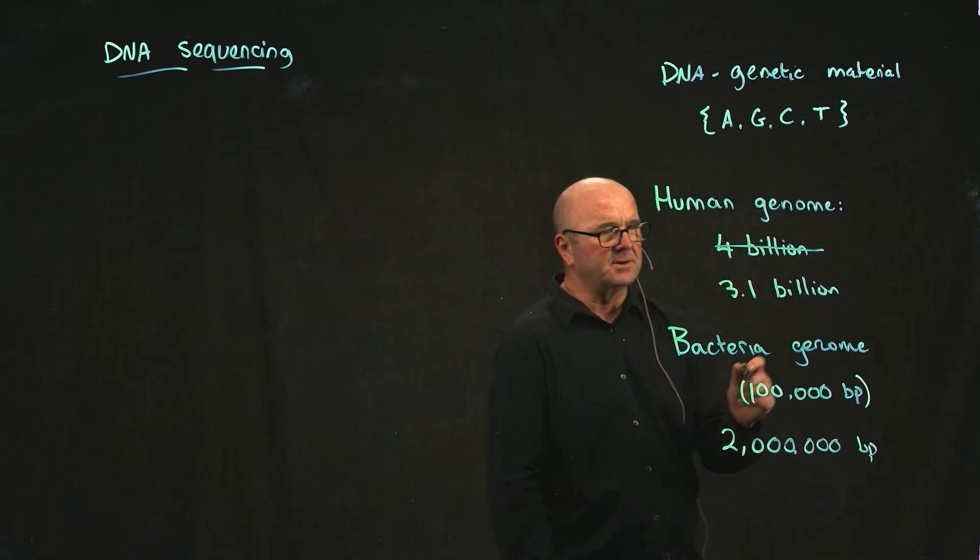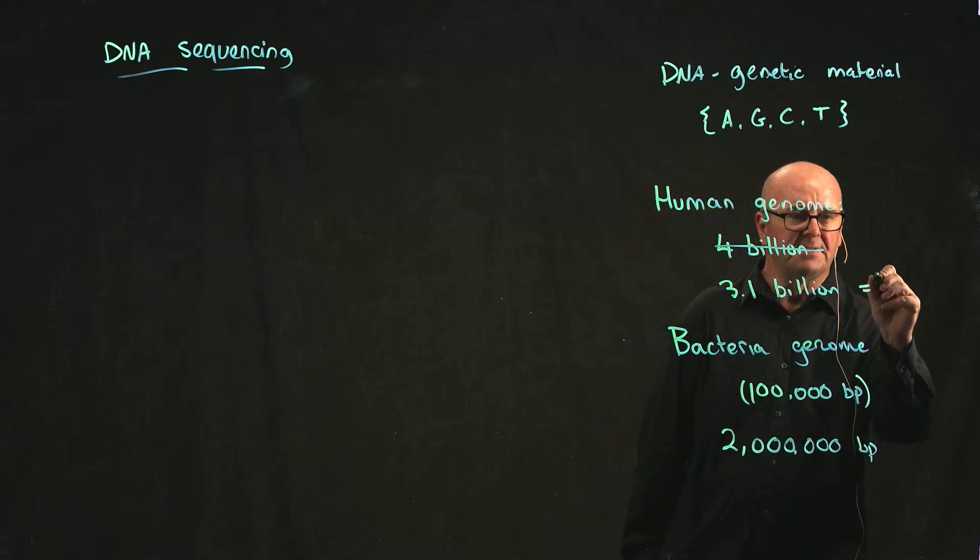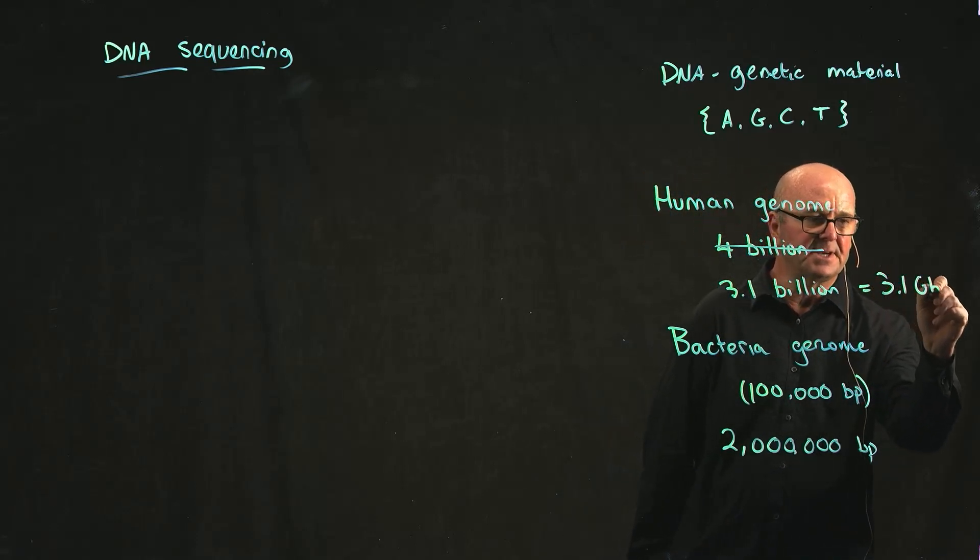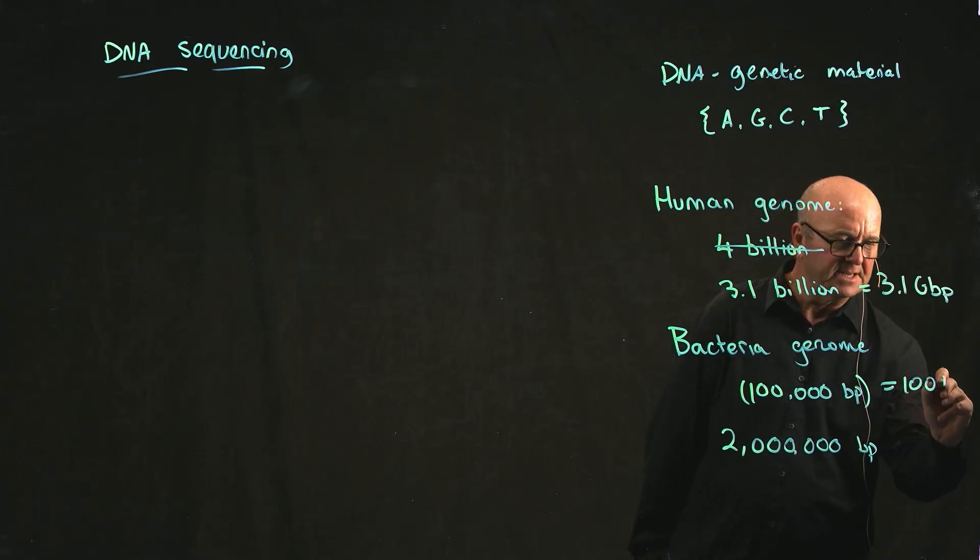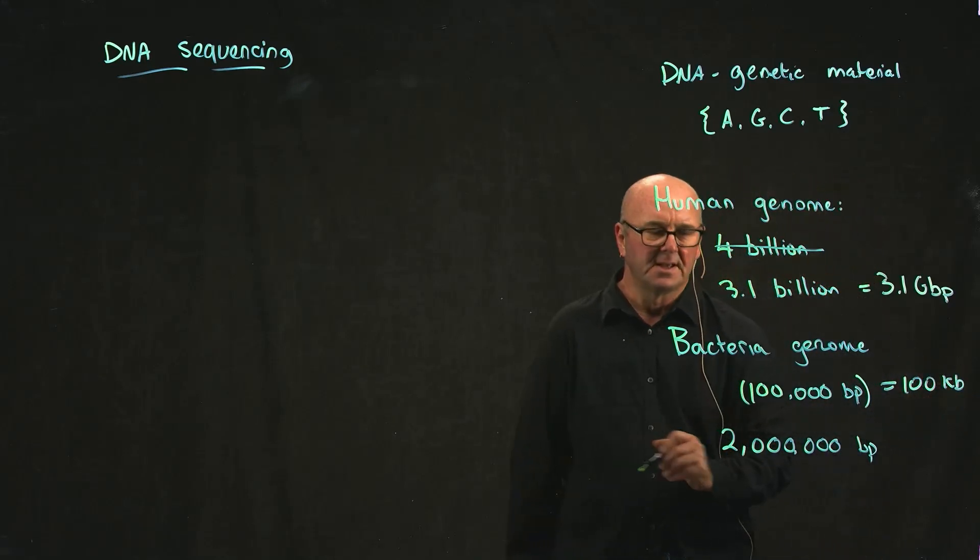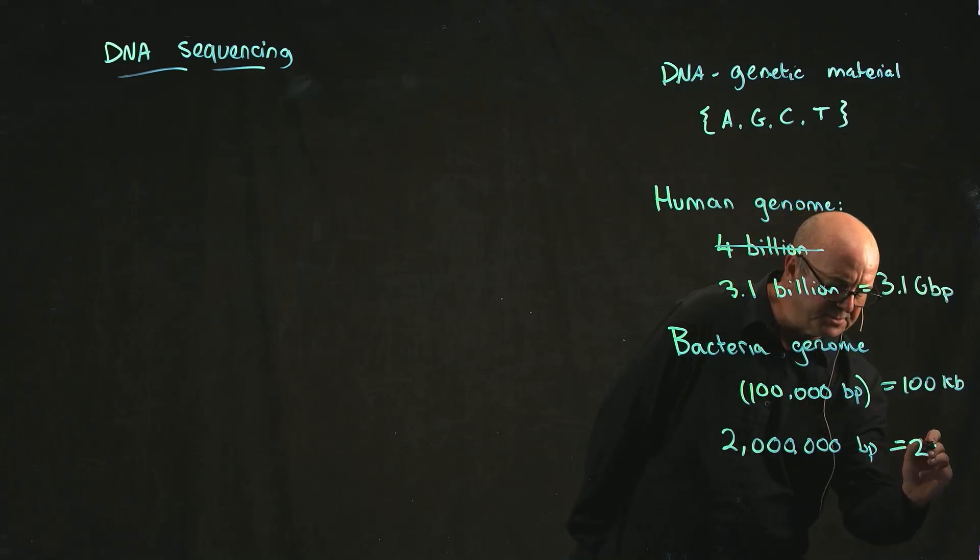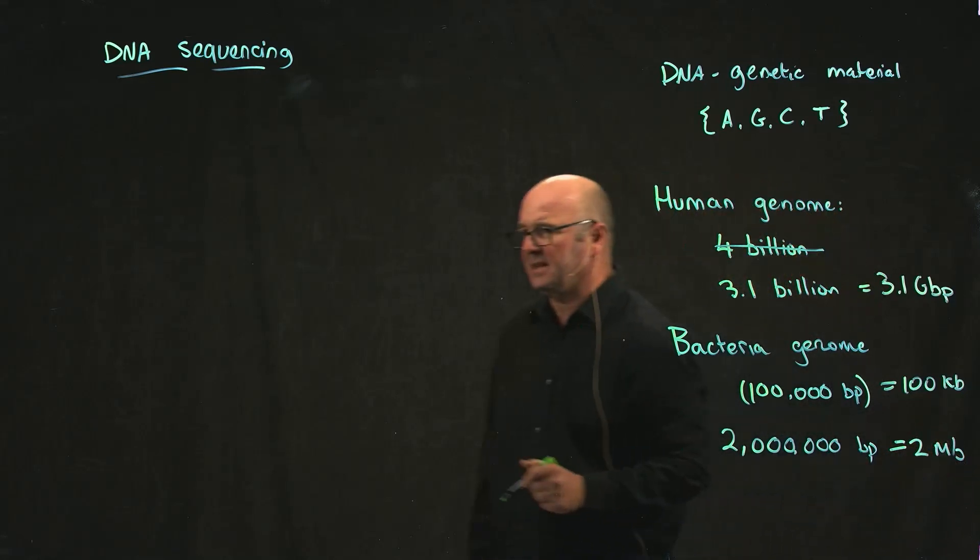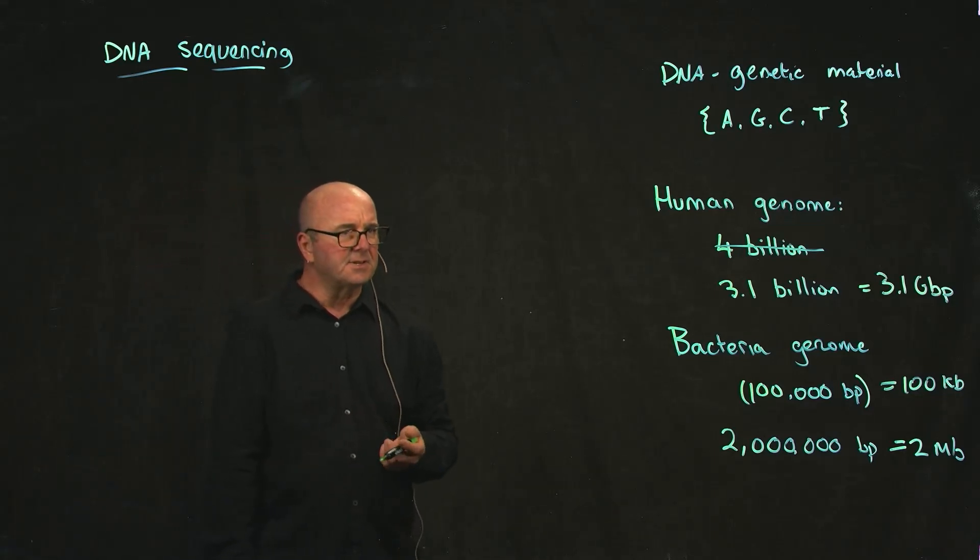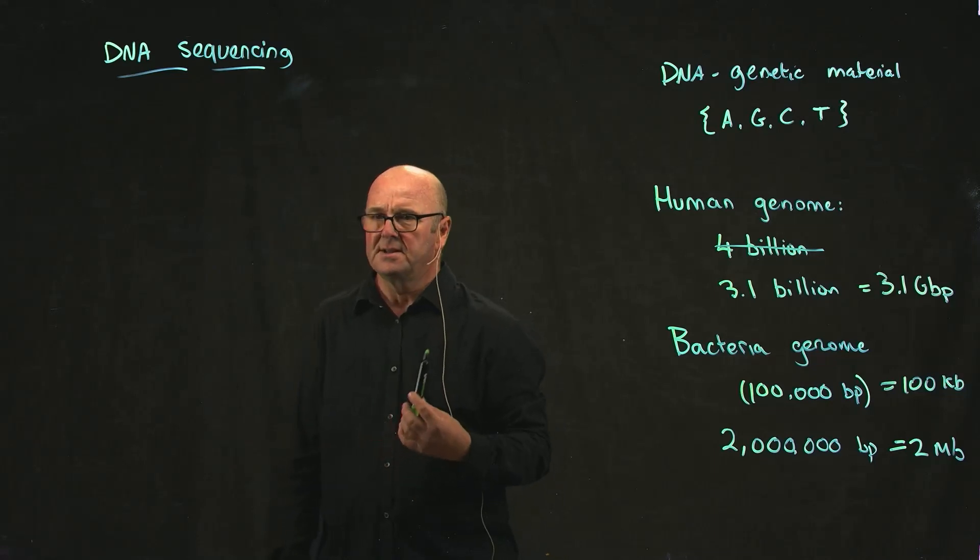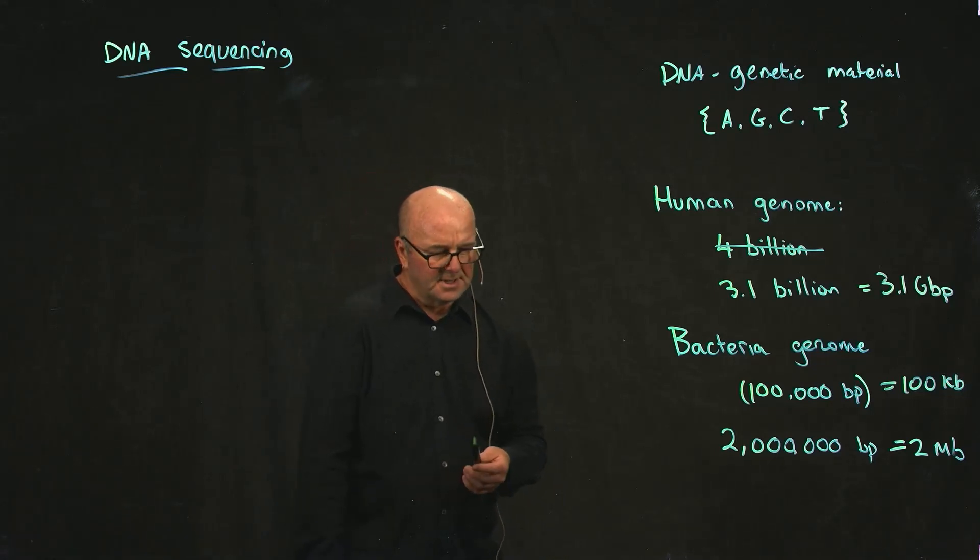In case I forget, this we abbreviate to 3.1 gigabase pair. This we abbreviate to 100 kilobases, and this we abbreviate to 2 megabases. So we're using the standard SI prefixes here: kilo for 1,000, mega for 1,000, giga for 10 to the 9.